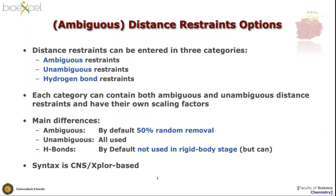In HADDOCK we have three categories for defining distance restraints: ambiguous restraints, unambiguous restraints, and hydrogen bond restraints. These are just naming categories — each can contain both ambiguous and unambiguous distances. Unambiguous restraints are always used; ambiguous restraints have 50% randomly removed by default, and this can be turned off. The hydrogen bond class is by default not used in the rigid body stage but only in the following stages.